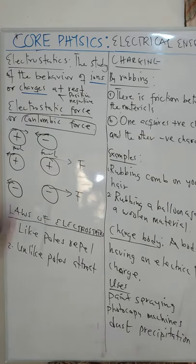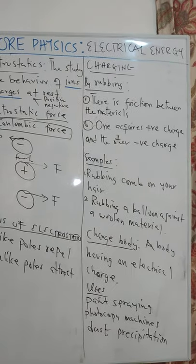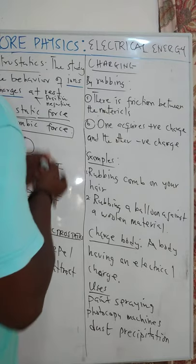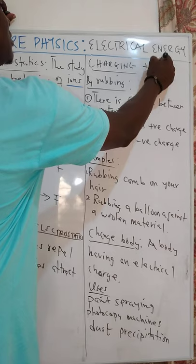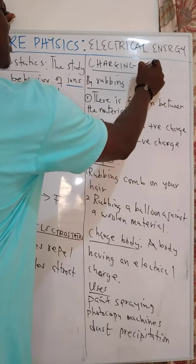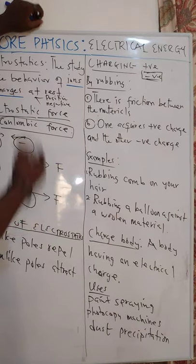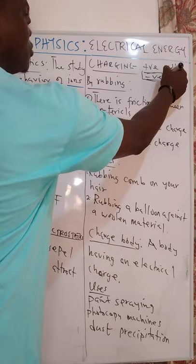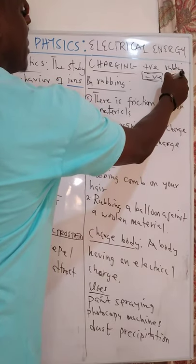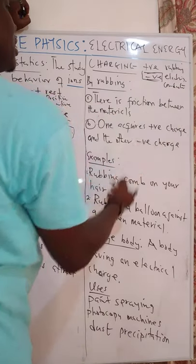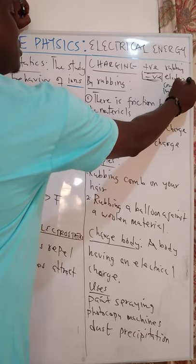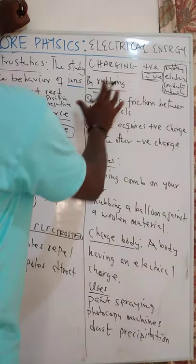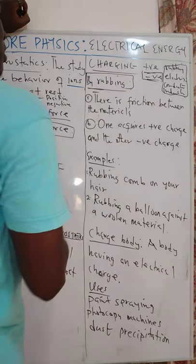Now, what is charging? Charging is a method by which a body will receive either a positive charge or a negative charge. A process by which a body receives either a positive or a negative charge is what we call charging. There are so many processes — we can do that by rubbing, by electrical method, by conduction, by induction. There are several types of charging, but here let us pay straight attention to charging a body by rubbing.